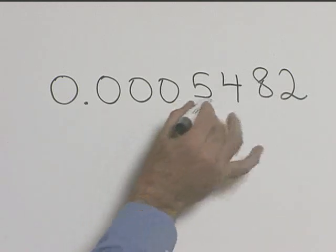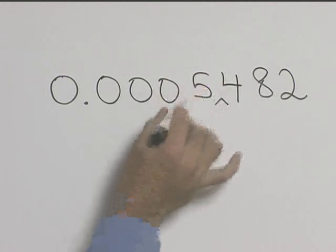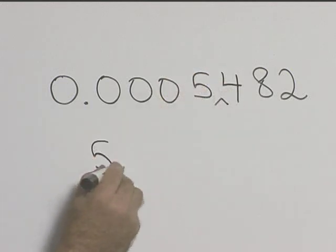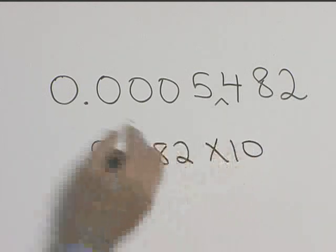So where do we want to do it? Well we want it to be right here so that a is between 1 and 10, in this case it's 5, so it'll be 5.482 times 10 to the...